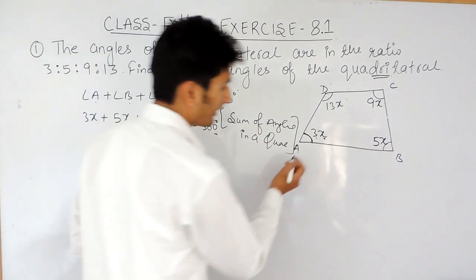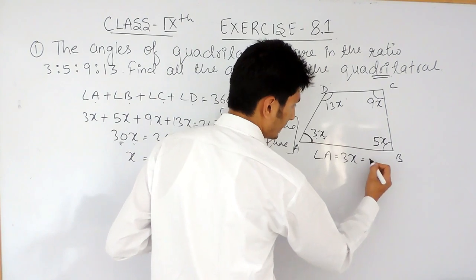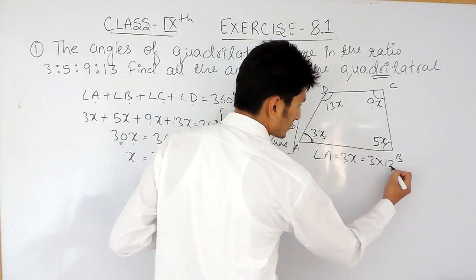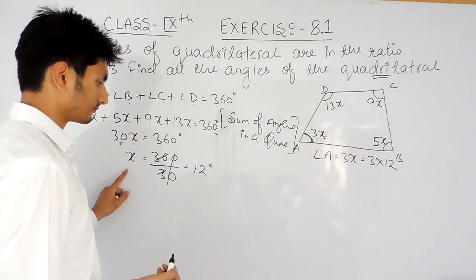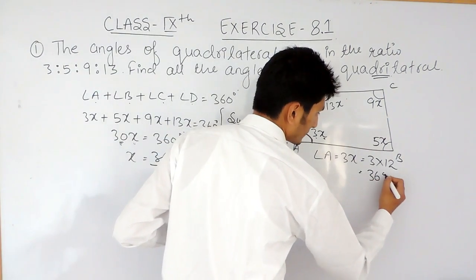Now, if you want to find the value of this angle, what you have to do is, angle A will be equal to 3x and the value of x here is 12. So, the value of A will be 36 degrees.